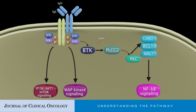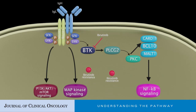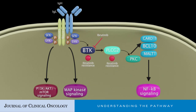BTK signaling and NFKB activation can effectively be blocked by the irreversible covalent small molecule inhibitor Ibrutinib. Mutations in BTK and/or PLCG2 cause resistance to the BTK inhibitor Ibrutinib in patients with CLL.